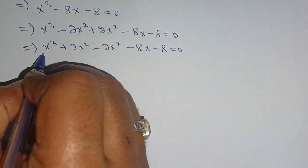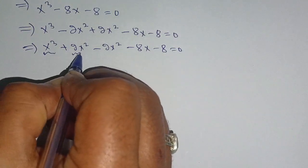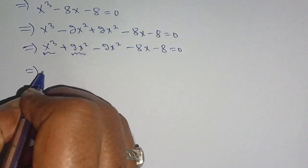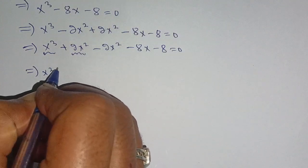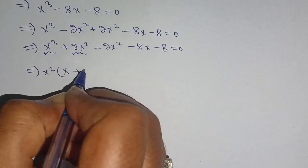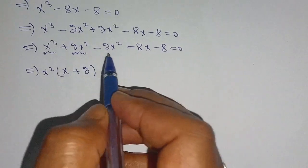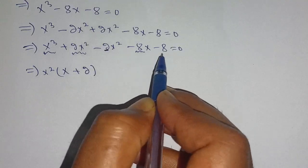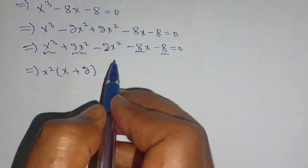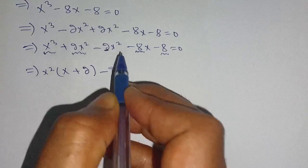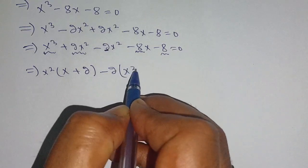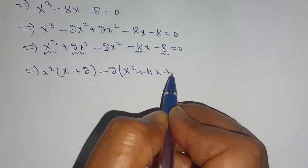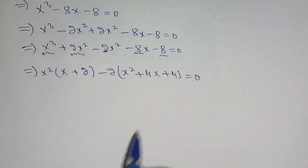Now from the first two terms we can take out x squared as common and we get x squared times (x plus 2). Now we can take out minus 2 from the remaining terms and we get minus 2 times (x squared plus 4x plus 4) is equal to 0.